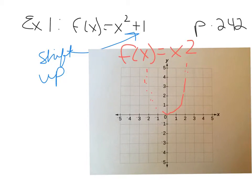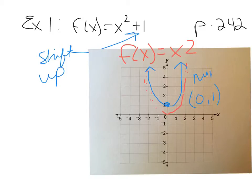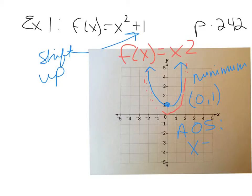I'm putting the vertex here at positive 1. The parabola is still standard width. The vertex is now at coordinates 0, 1. Since it's at the bottom, it's a minimum. The axis of symmetry — I'll use AOS to abbreviate — runs right through the center. The equation is x equals 0, which is the y-axis.